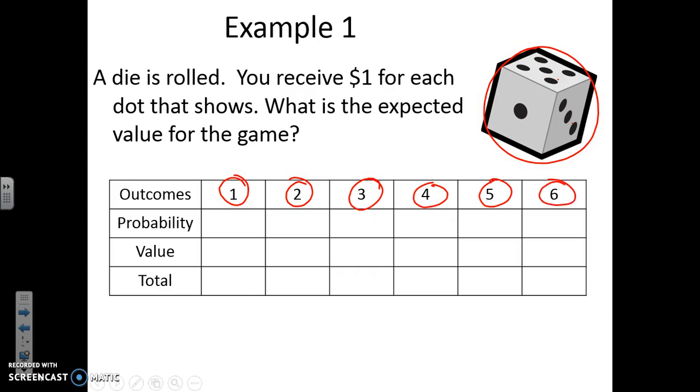Now, what is the probability of getting a one if you roll one die? Yeah, it's one out of six. There's one one out of six spots you can do, so one out of six.